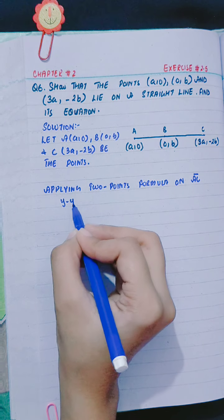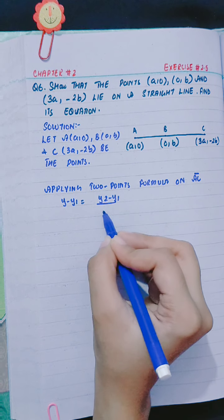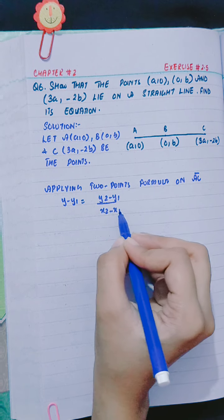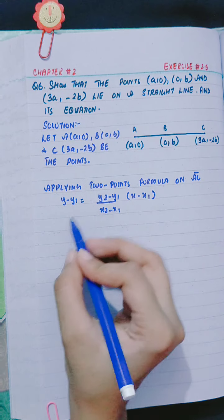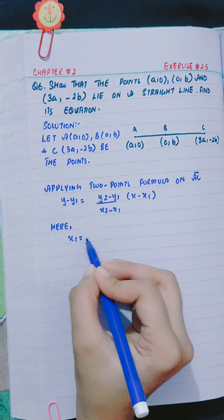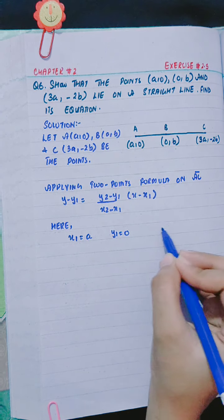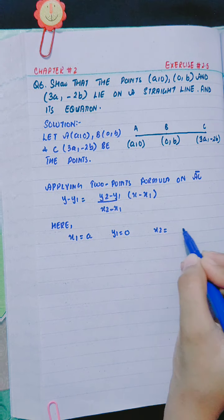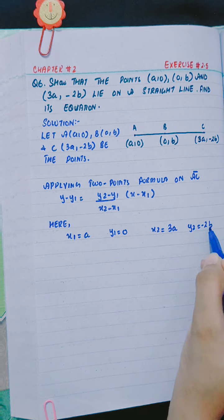Two-point formula: y minus y1 equals y2 minus y1 divided by x2 minus x1 into x minus x1. Here, x1 equals a, y1 equals 0, x2 is 3a and y2 is minus 2b.